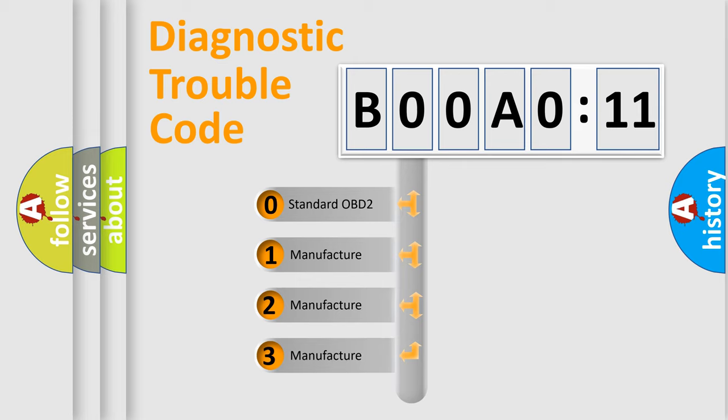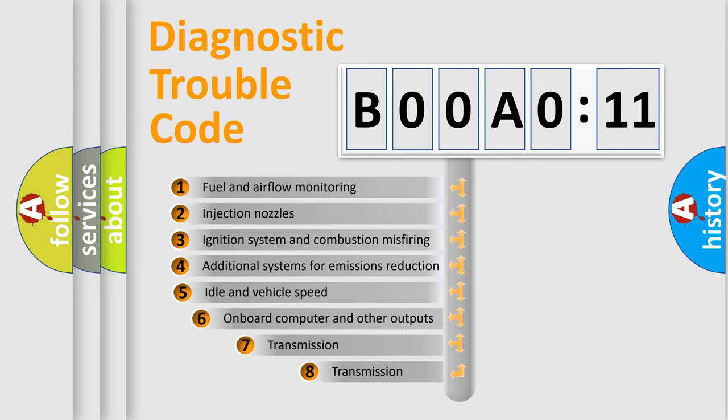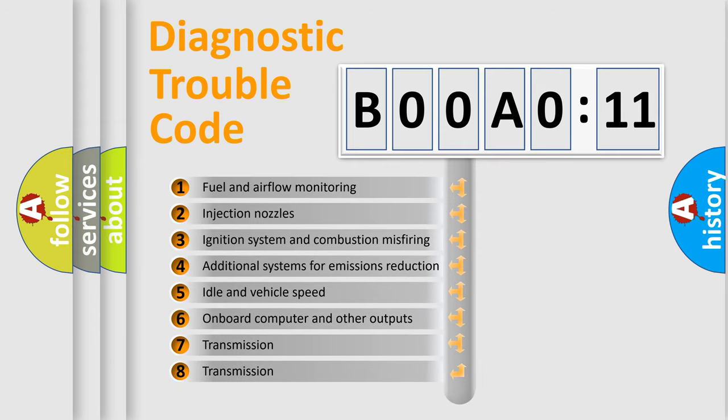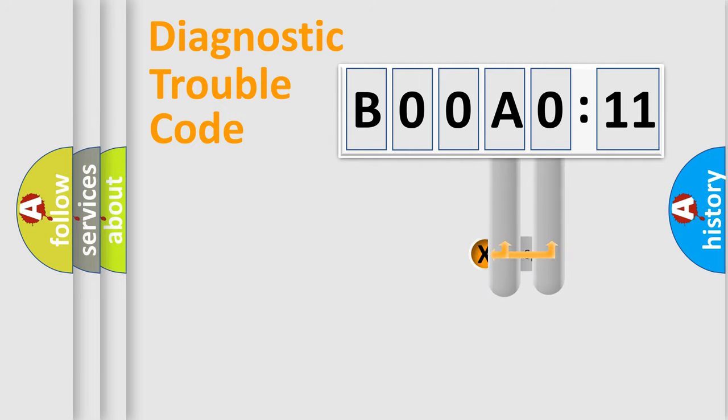If the second character is expressed as zero, it is a standardized error. In the case of numbers 1, 2, or 3, it is a manufacturer-specific error. The third character specifies a subset of errors. The distribution shown is valid only for the standardized DTC code. Only the last two characters define the specific fault of the group.